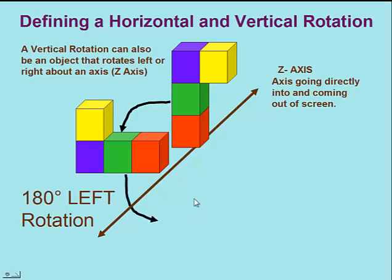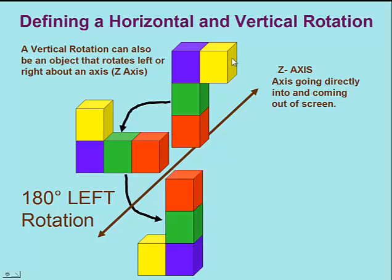Another 90-degree rotation to the left makes a full 180-degree rotation. The object that was pointed right is now pointed left and is upside down.